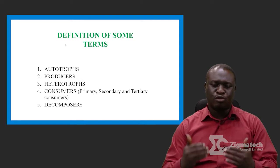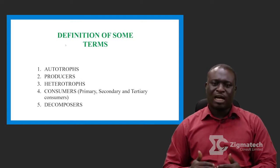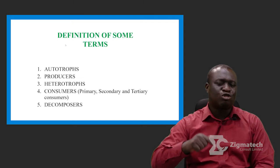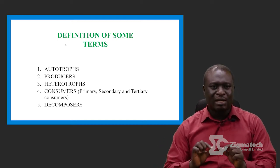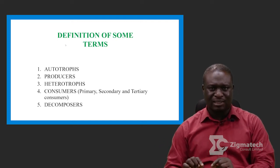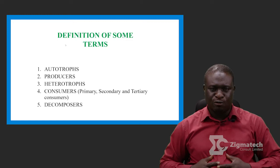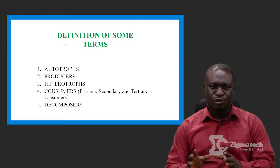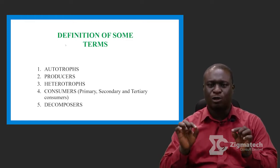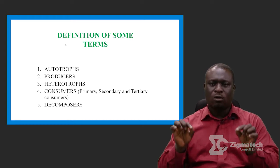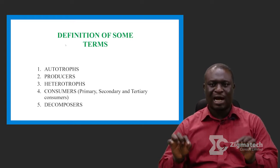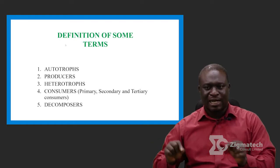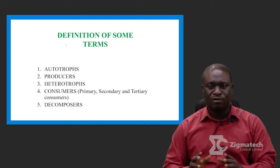Number two is producers. What are producers? Producers are autotrophs — mostly green plants that manufacture their own food. The key point is that all producers are autotrophs that are green plants and can manufacture their own food.